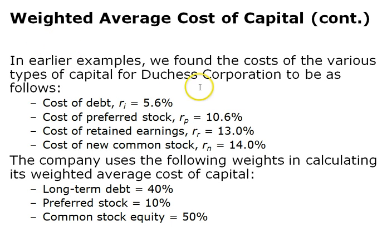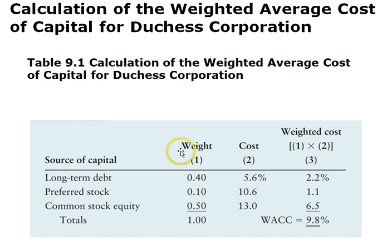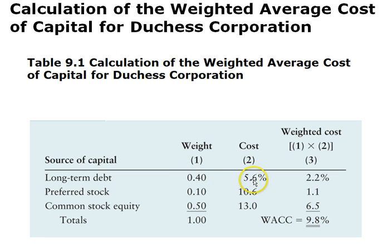For Dutchess Corporation, we calculated the after-tax cost of debt, cost of preferred stock, cost of retained earnings, and cost of new stock. Their capital structure is 40% long-term debt, 10% preferred stock, and 50% common stock equity. Multiplying 40% × 5.4% + 10% × 10.6% + 50% × 13%, summing these three results gives the weighted average cost of capital.